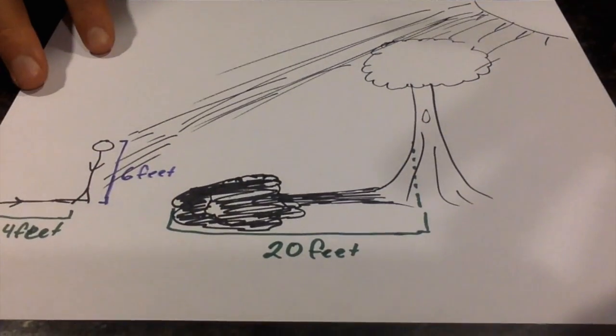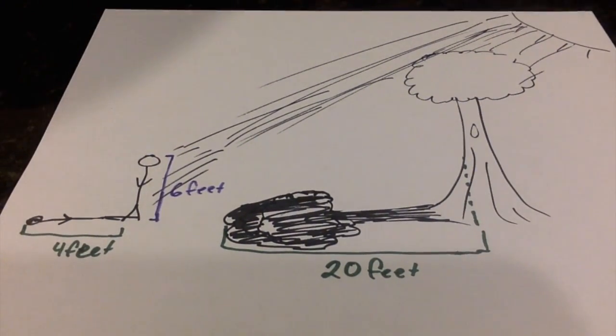If we look at this picture here, we have a person and a tree. We're going to use the distance of the shadow to prove the height of the tree. In the picture, we have the tree that casts a 20-foot shadow.